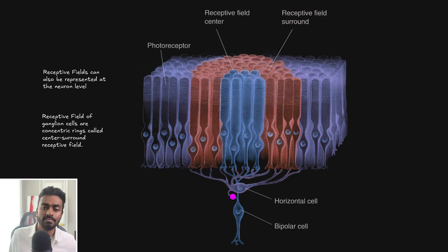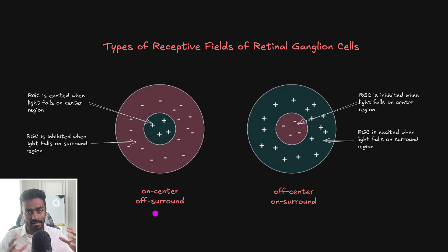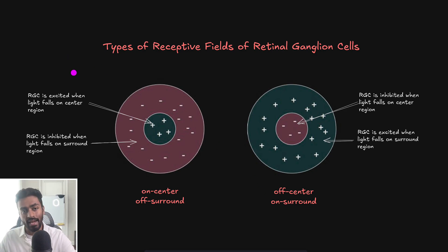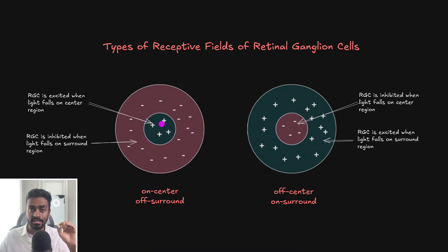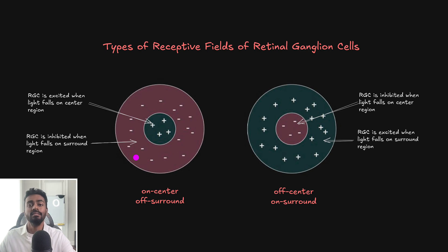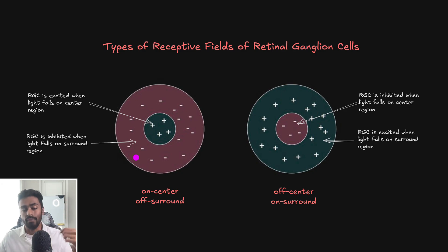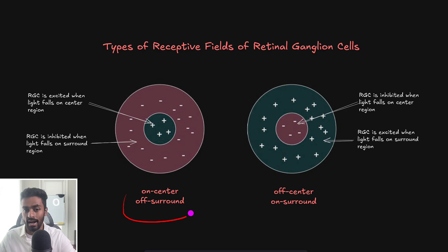So the center is directly connected, whereas the surround is indirectly connected via a horizontal cell. With this physiology, a retinal ganglion cell can have two types of receptive fields. In one type, if light passes to the photoreceptors in the center region, the ganglion cell is going to be excited — it'll start firing very rapidly. On the other hand, if light is shown and absorbed only by the photoreceptors in the surround region, the retinal ganglion cell might be inhibited — the frequency of its response slows down. This is an on-center, off-surround receptive field.